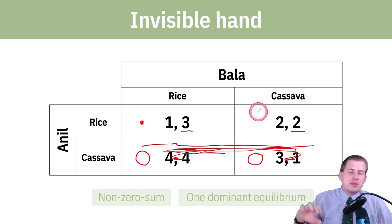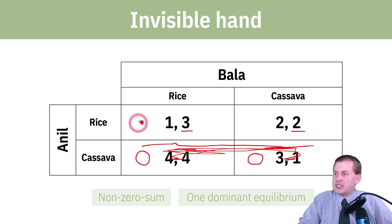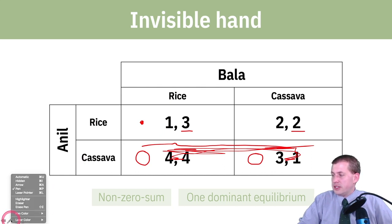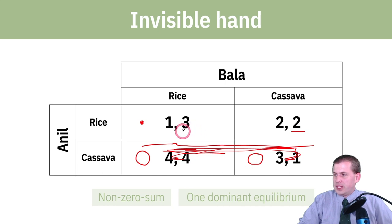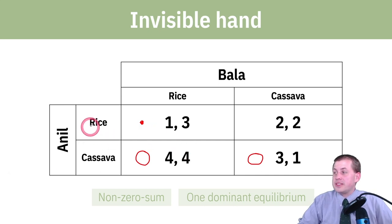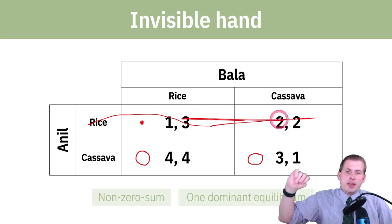So the best choice for Bala, assuming Anil does rice, is also rice. For that player, we put a dot — it doesn't matter what symbol you use, a square, a star, a circle, whatever — it just means this is the best choice for player two given what player one is doing. Now we want to assume that Anil is growing cassava: ignore the rice row, cover it up, and don't look at it.